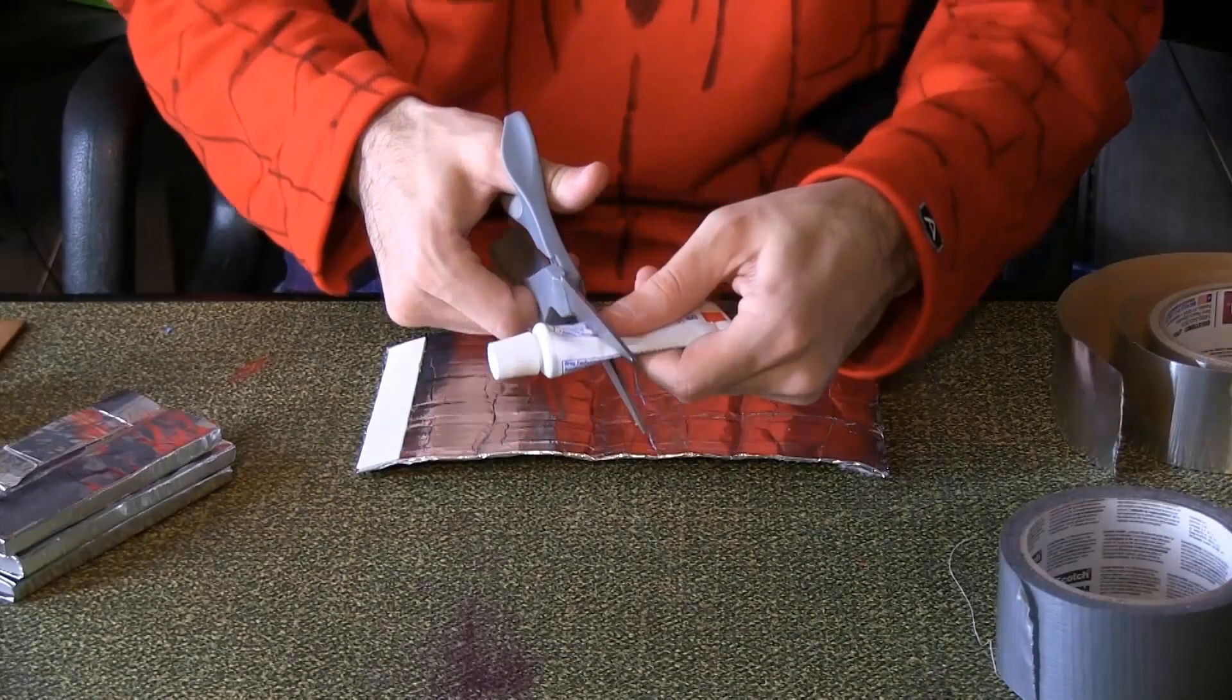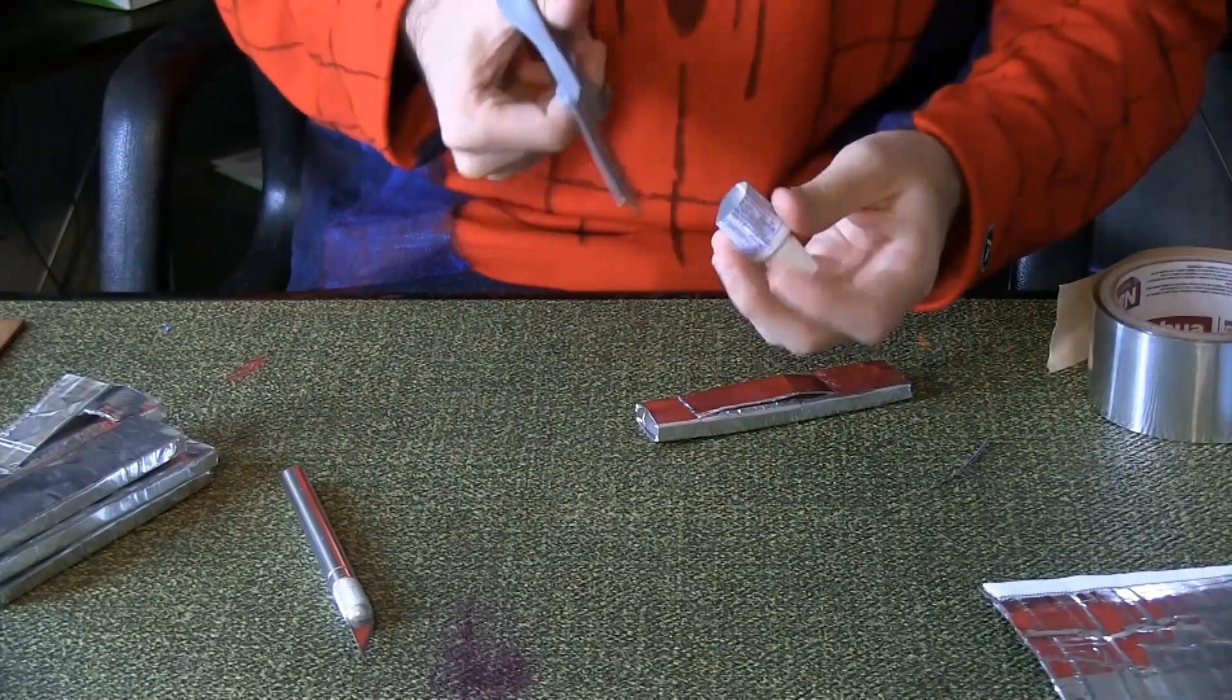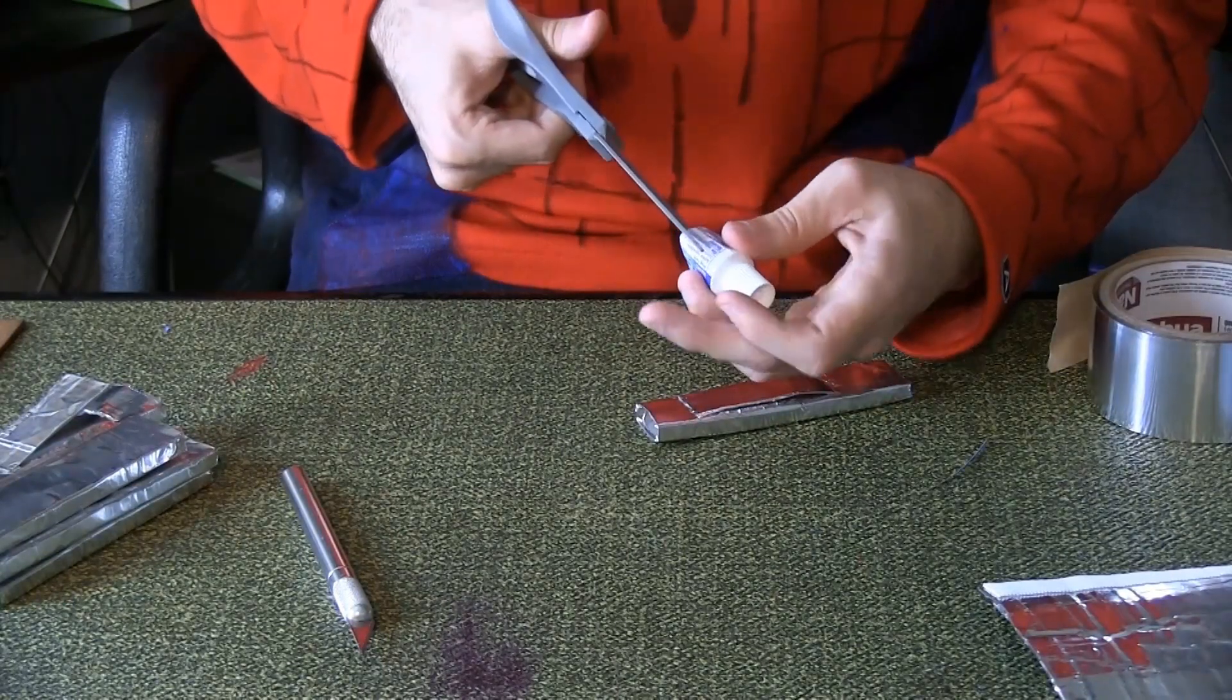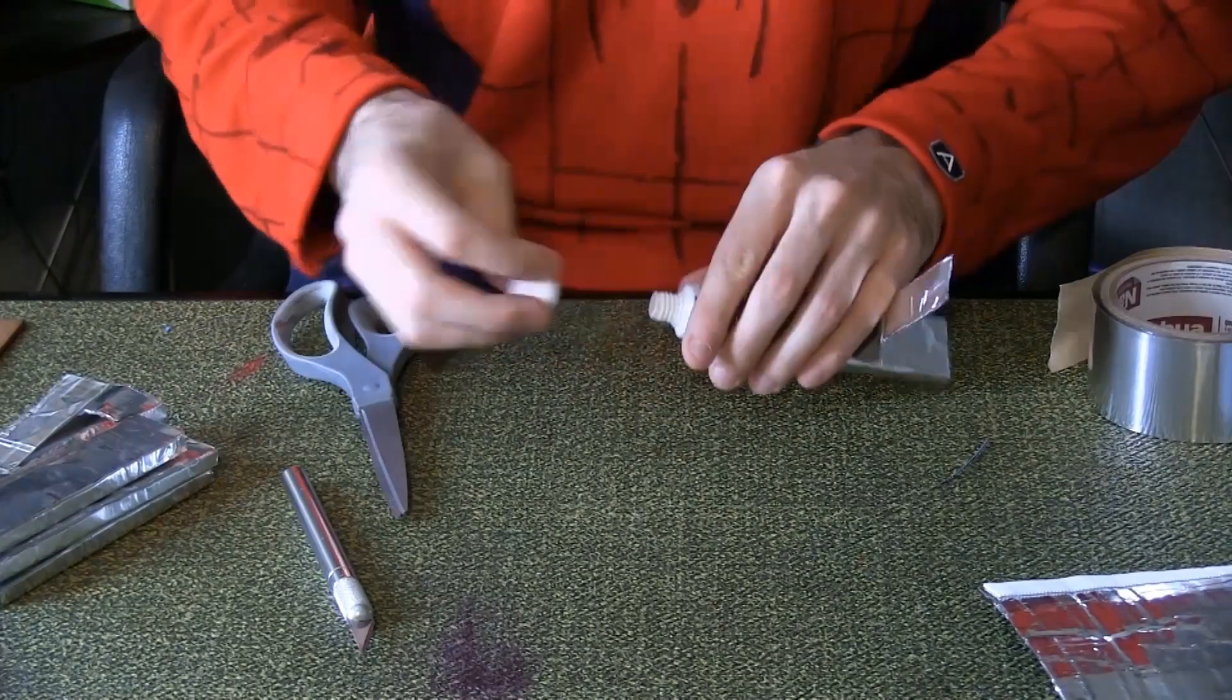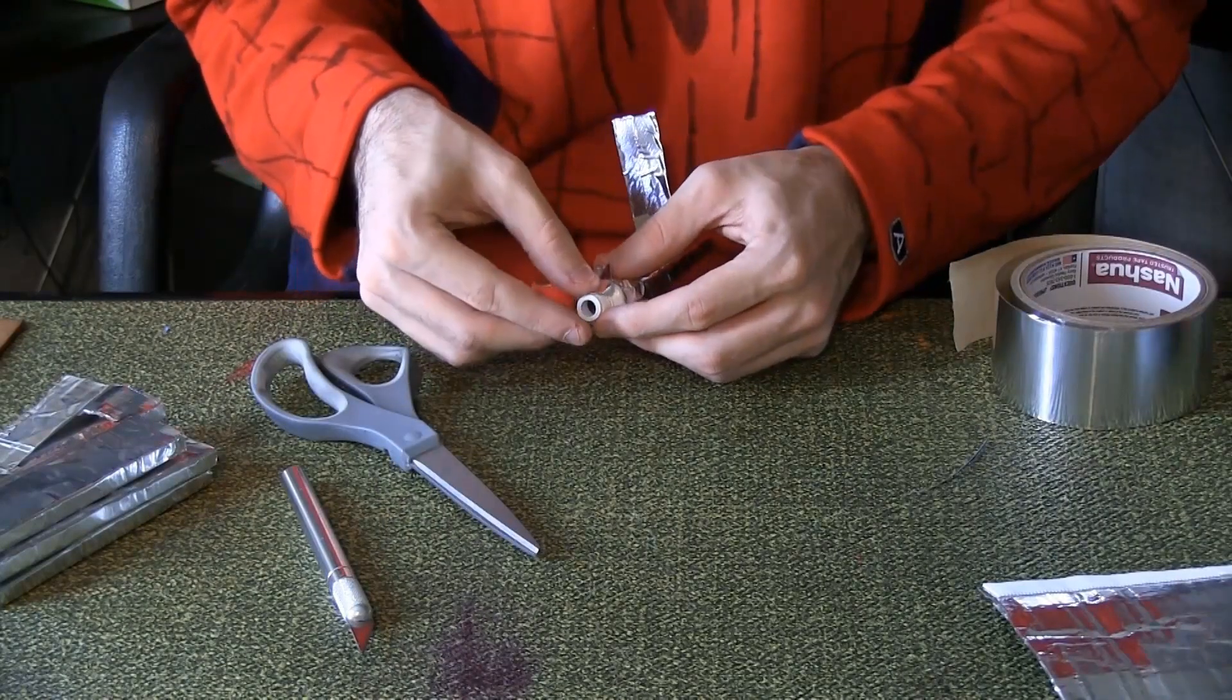Empty the toothpaste bottle, cut off the top, and rinse it out. Cut both sides of the tube. Place it on the end of a box and remove the cap. Attach the tube to the box with aluminum tape. Cover the rest of the tube with aluminum tape.